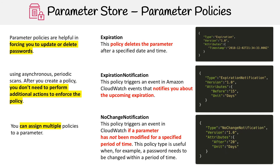The last one is No Change Notification. Let's say you have a parameter that's supposed to be modified manually by a developer — they're supposed to update it themselves. After x amount of days, minutes, or hours, this policy will tell you, hey, nothing has changed, so maybe you should go ahead and investigate. That is parameter policies.